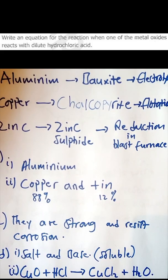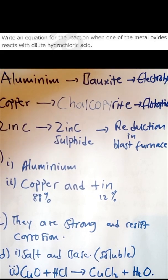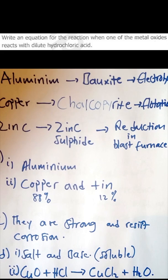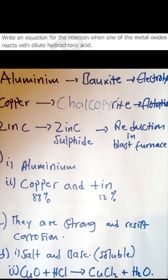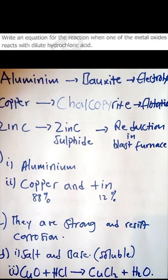Question d: write an equation for when one of the metals reacts with dilute hydrochloric acid. Part i asks what products are formed when a metal oxide reacts with an acid — you get a salt and water. The equation given is: copper oxide plus hydrochloric acid produces copper(II) chloride (a salt) and water.